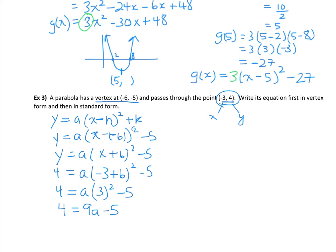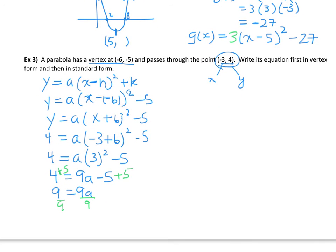And now I'm ready to solve for A. I'm going to undo the minus 5 by adding 5 to both sides. I'm going to get 9 equals 9A, and then we're going to divide both sides by 9 to get the A by itself, because A is being multiplied by 9, and I get that A is equal to 1.